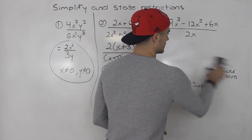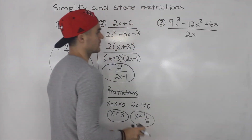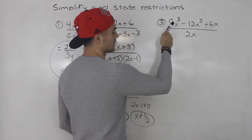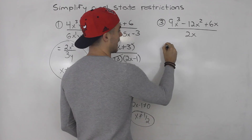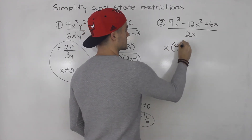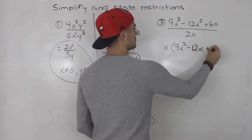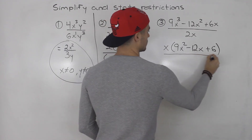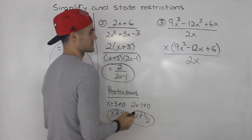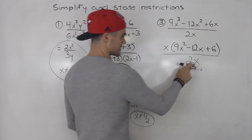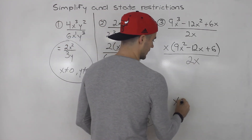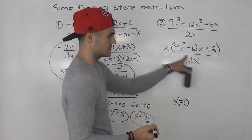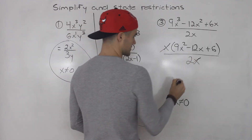Number three: step one, factor. From the numerator, we can take out an x, leaving x times the quantity 9x squared minus 12x plus six, all over 2x. From step two, it's easy to see that x cannot equal zero — that's the restriction — because if x is zero, the denominator is zero. Then the x's cancel out.